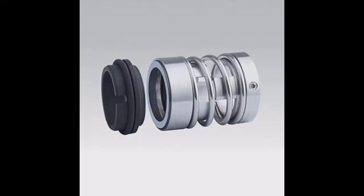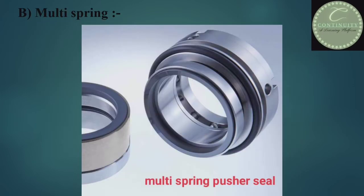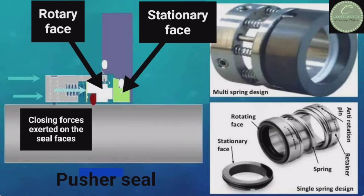A pusher seal is basically installed with a single spring or multiple springs, as well as a movable O-ring which acts as a secondary seal. The spring is used to maintain contact between the seal faces, and the O-ring is used to prevent leakage between the sleeve and the rotary unit. It moves on the sleeve or shaft with the help of the spring to maintain contact between the rotary seal face and stationary seal face, with closing force applied by the springs.